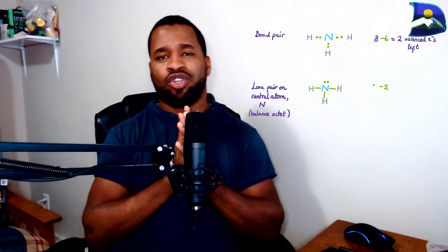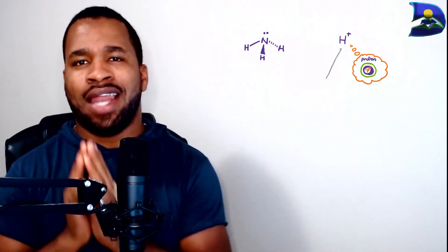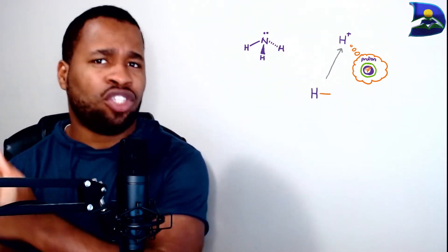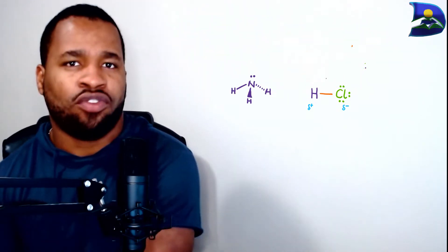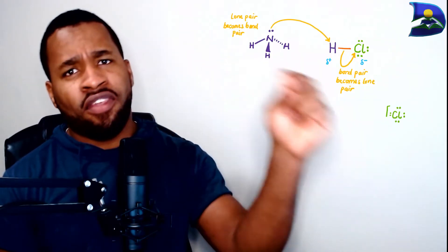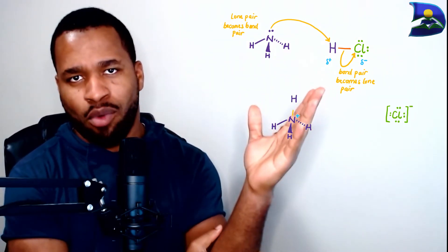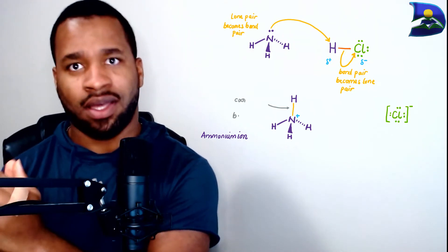Looking at various examples, ammonia: when you build its Lewis structure, you notice it is polar covalent, which was addressed in previous videos. One step further is introducing a proton — a hydrogen cation. Since it has no electrons, you bring in hydrochloric acid. HCl has hydrogen and chlorine, and the bonding pair is broken — the chlorine takes the lone pair while hydrogen is picked up by the lone pair on nitrogen in ammonia.